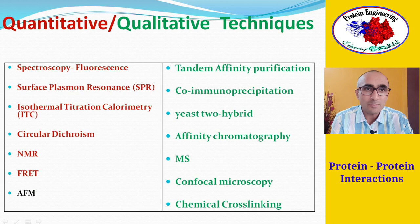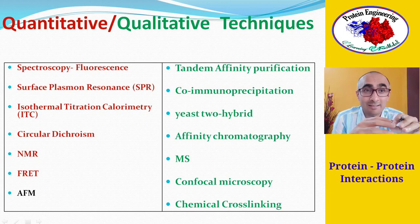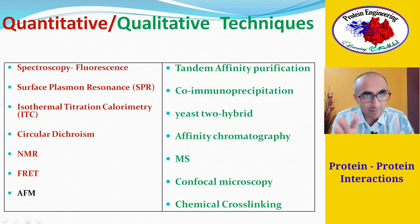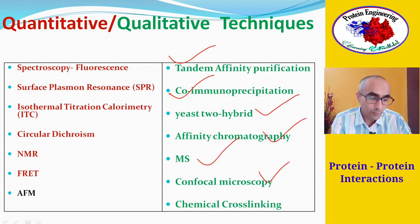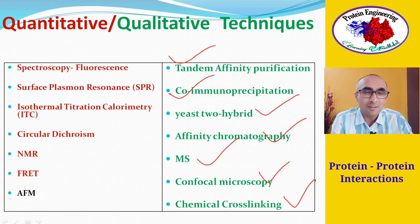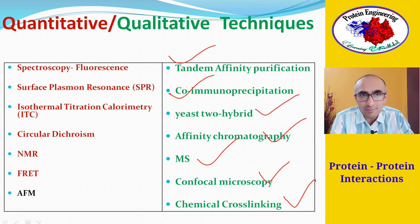Protein-protein interactions can be determined using different techniques, categorized as qualitative or quantitative. Qualitative techniques are used when you want to find the partners of a protein in solution — to fish out which proteins it associates with. These include tandem affinity purification, co-immunoprecipitation, two-hybrid system, affinity chromatography, mass spectrometry, confocal microscopy, and chemical cross-linking.